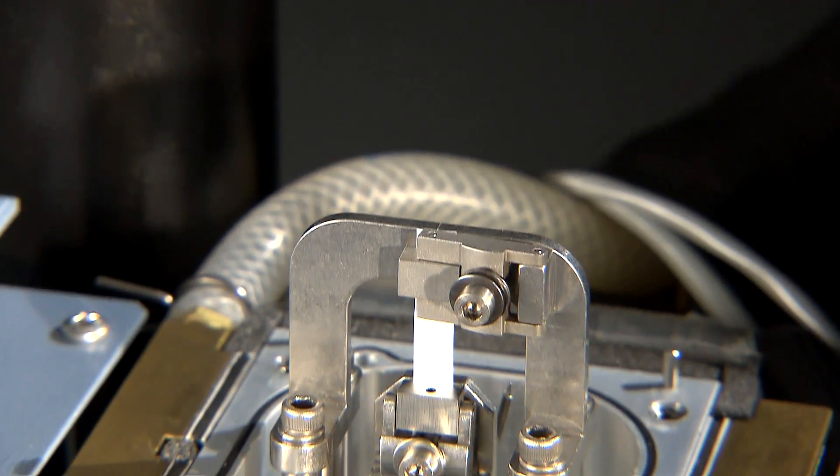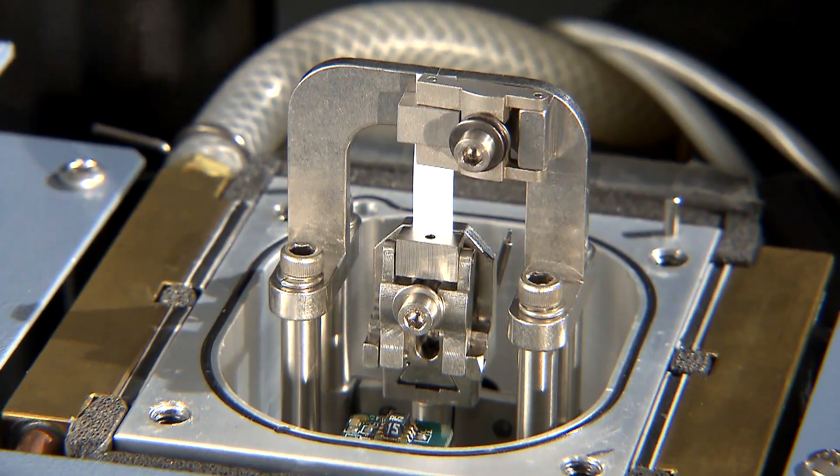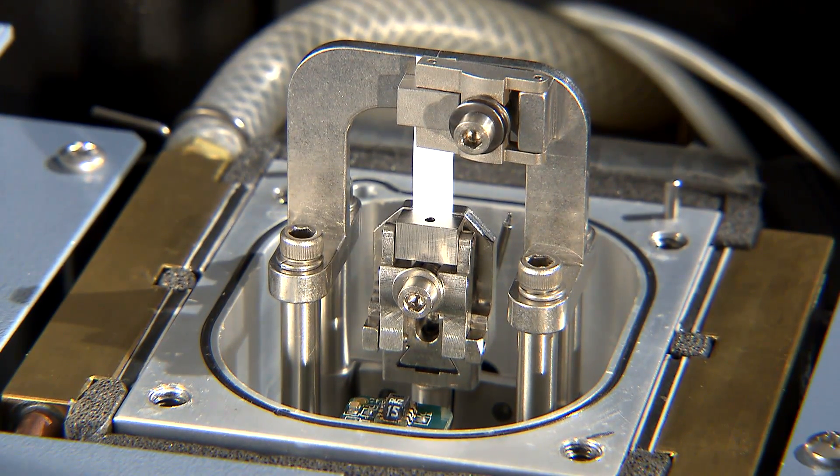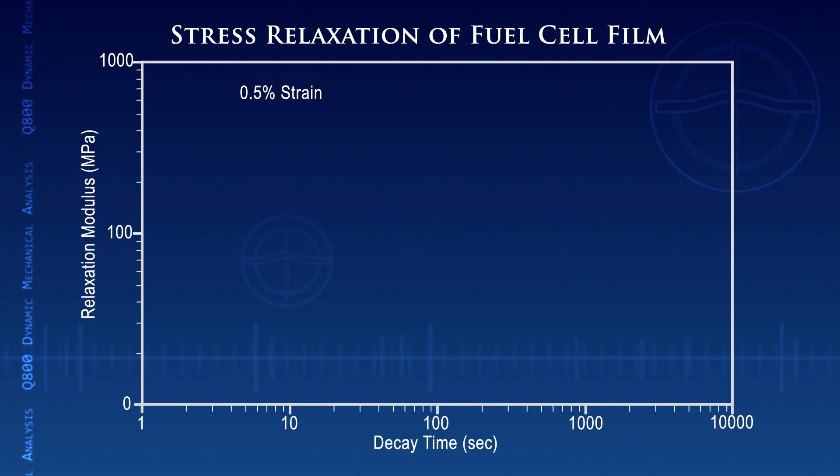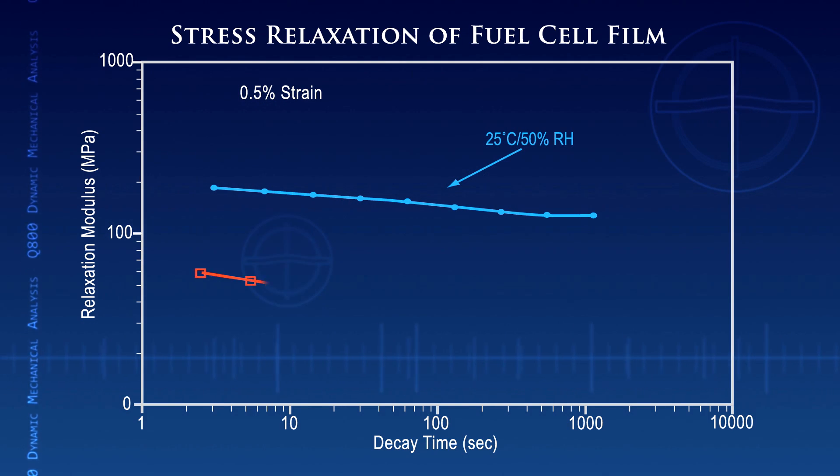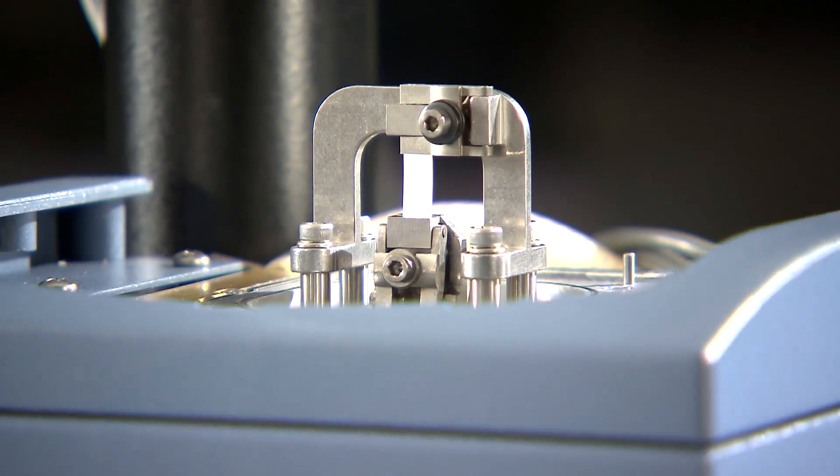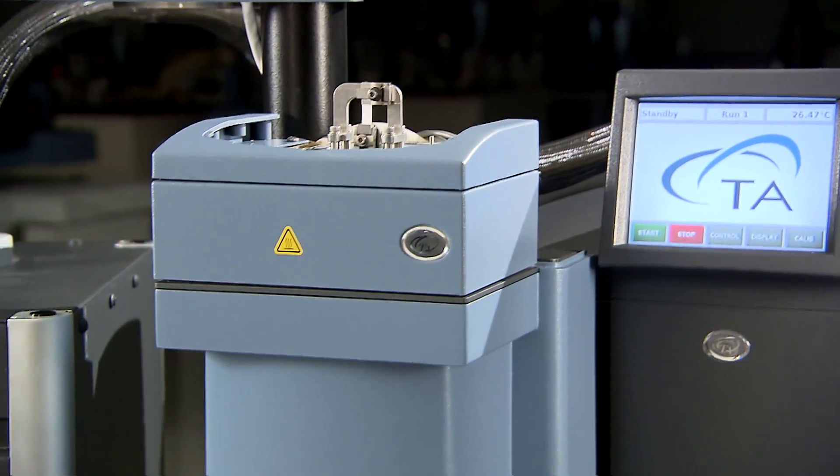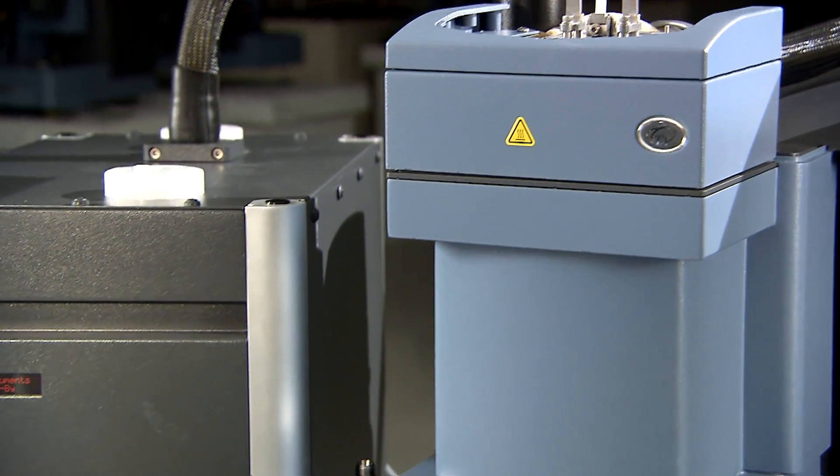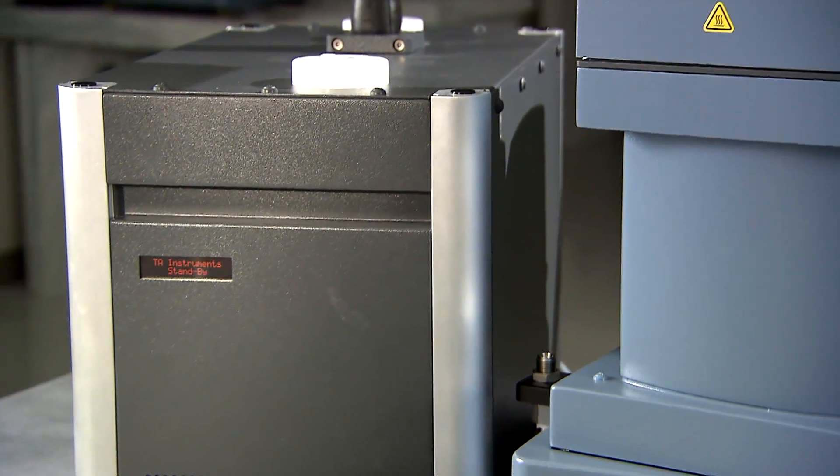Other tests can be used to determine the viability of materials for a particular application. In this experiment, the stress relaxation of a polymer film designed for use in fuel cells is measured under both ambient conditions as well as under elevated temperature and RH.